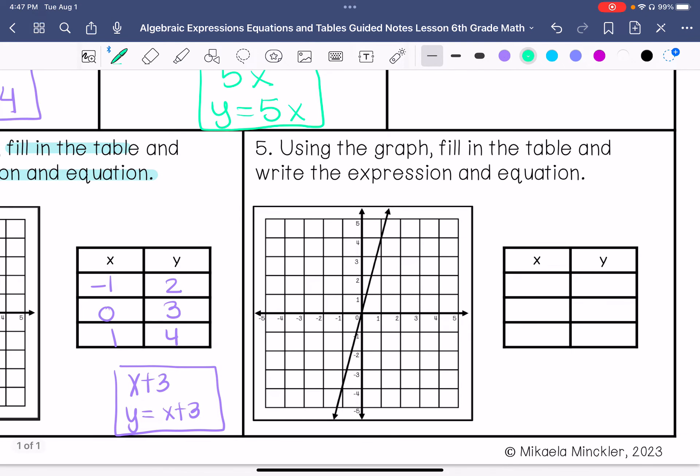Number 5, using the graph, fill in the table and write the expression and equation. At negative 1, we are at negative 4. At 0, 0. So this one goes through the origin, so I know that it's going to be multiplicative. And then 1, 4, so this is going to be 4x or y equals 4x.